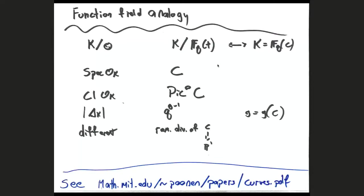Poonen has a great three-page table on the function field analogy. The quick version I need here is that finite extensions of Q and finite extensions of F_q(T) are both global fields that behave effectively the same in many regards. A finite extension K of F_q(T) is either the function field of some curve, or an extension of the constant field. The analog of the ring of integers is just the curve C. Spec O_K is one-dimensional, as is a curve. The class group is not just an analogy — it's literally the same object: the Picard group of C, divisors modulo equivalence.